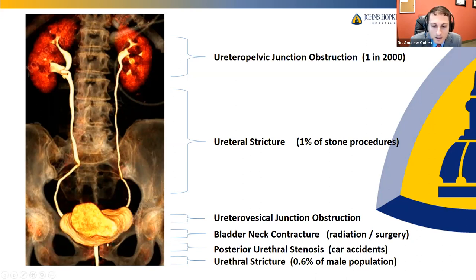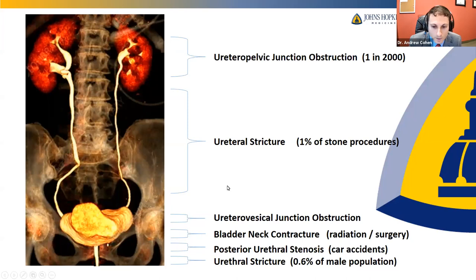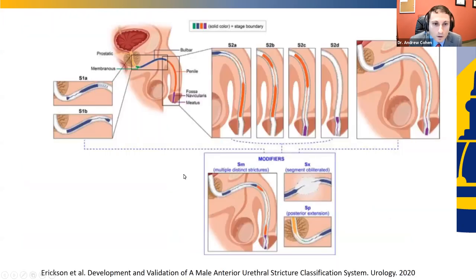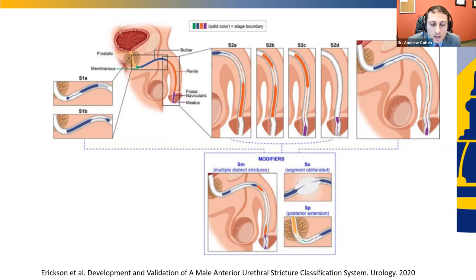The urethra itself can be a source of strictures. It's estimated that just under 1% of men can develop a stricture within the urethra, while for women it's much rarer. The male urethra is longer with more anatomy, and there are many different types, subtypes, and subclassifications within the male urethra that describe strictures based on location and other characteristics.